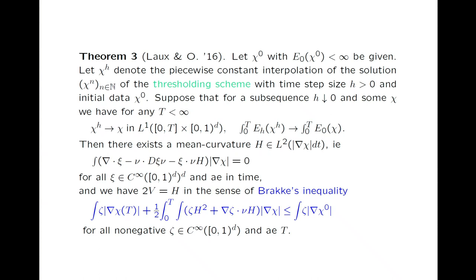We have two types of results — Tim Lauchs and I have two types. One is more in the spirit of Luchhaus and Sturzenhecker, but does not contain even the global dissipation inequality. The second result contains not just the global dissipation inequality, but the family of local dissipation inequalities, which according to Bracke are sufficient to characterize mean curvature flow — at least in the sense that if the limiting evolution comes from a smooth evolution, this condition is equivalent to mean curvature flow.